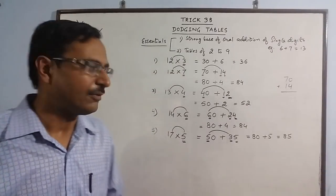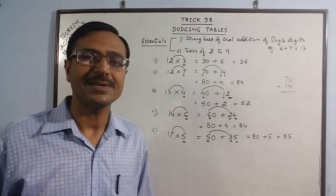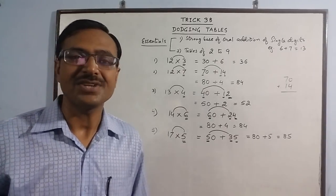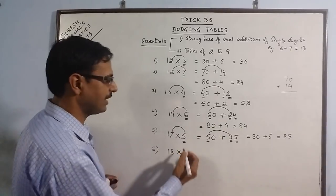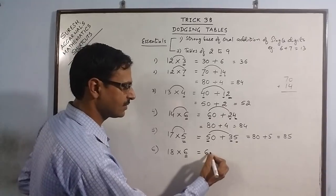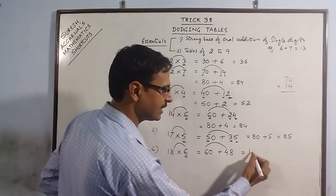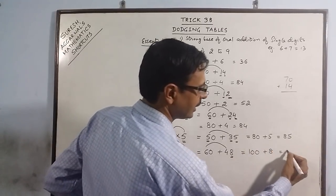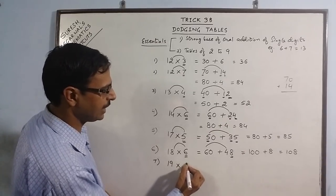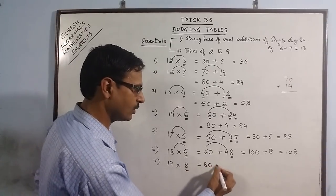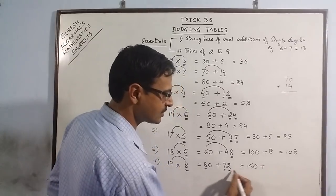Even parents will feel comfortable teaching this concept, because when you are convinced about a particular concept you can confidently teach the child how to deal with dodging tables. Let us take one more example: 18 multiplied by 6. Here it is 6, supplemented by 0; 6 eights are 48. Now 6 plus 4 is 10, put a 0 and add 8 — so 108. One more: multiply by 8; put a 0; 8 nines are 72; 8 plus 7 is 15, put a 0 and add 2 — so 152.